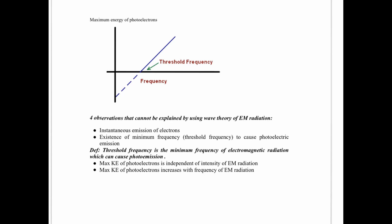Scientists realized that the only factor affecting the maximum energy of photoelectrons is the frequency. Plotting maximum KE versus frequency shows that the higher the frequency of EM radiation, the higher the maximum KE — but only provided you start from the threshold. At the threshold frequency, electrons begin to emit. Below the threshold frequency, nothing happens.